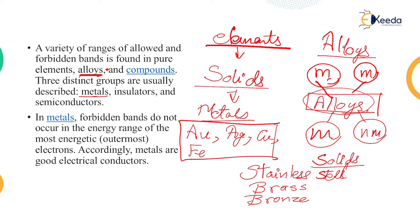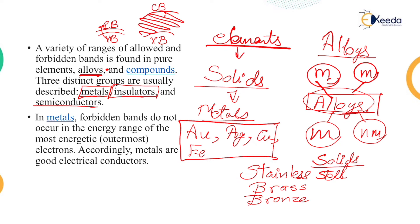Three distinct groups are usually described: metals, insulators, and semiconductors. For metals, the band gap is very small, so electrons can move from the valence band to the conduction band very easily. For insulators, the band gap is very large, and that is the reason why insulators cannot conduct heat or electricity. Semiconductors depend on external factors — at times they can be good conductors of heat and electricity, and at times they cannot. It actually depends on conditions such as temperature and pressure. In metals, forbidden bands do not occur in the energy range of the most energetic electrons — accordingly, metals are good electrical conductors and generally good heat conductors as well.